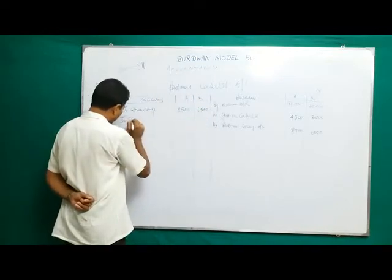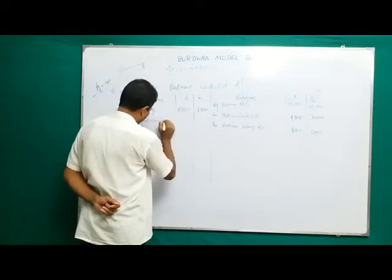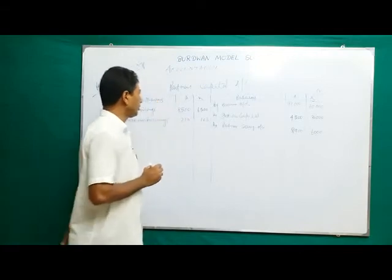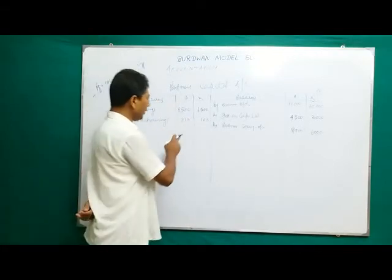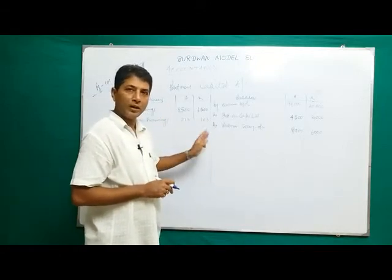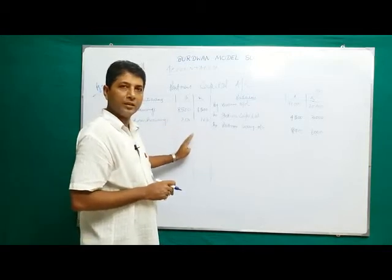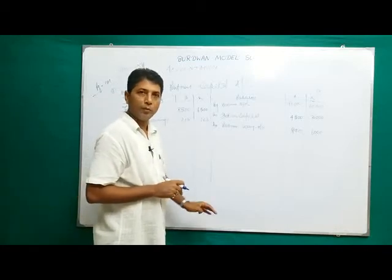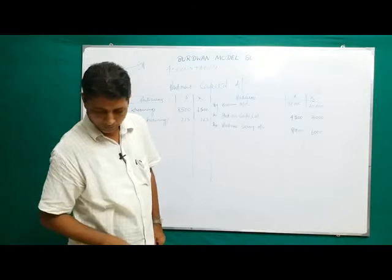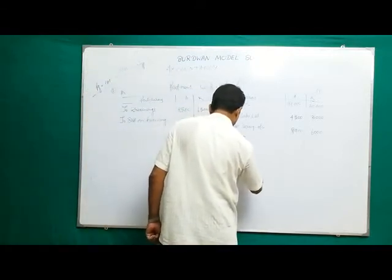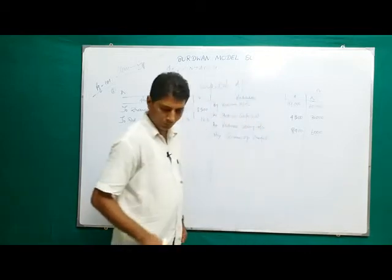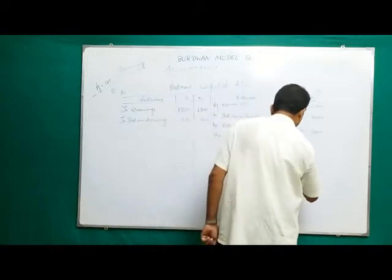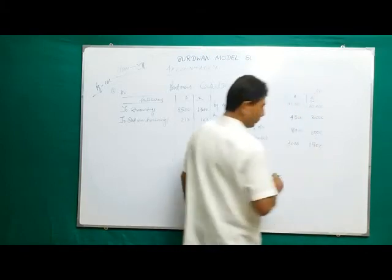Interest on drawings: Onuba 213, Kajol 163. This is calculated on a half-year basis — six months ended — because when drawings dates are not mentioned within the problem, we calculate for six months. Next, 'By Share of Profit': total profit 45,000, ratio 2 to 1, so Onuba gets 2/3 equals 30,000 and Kajol gets 1/3 equals 15,000.